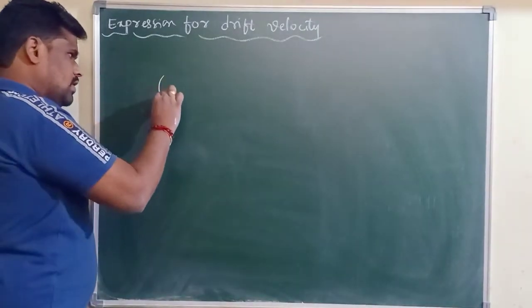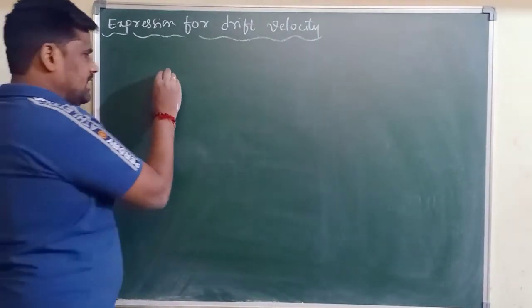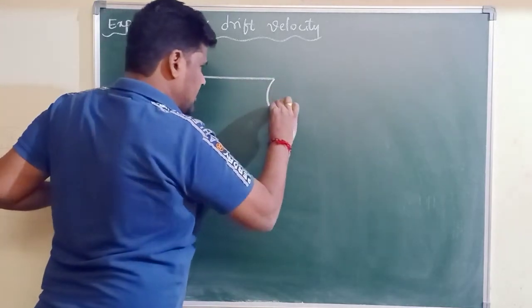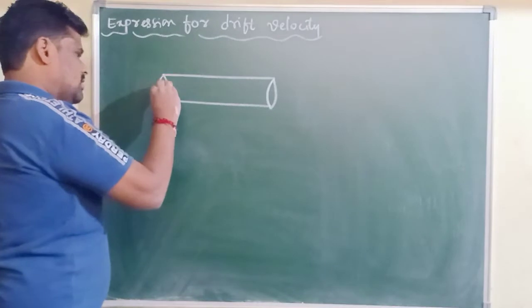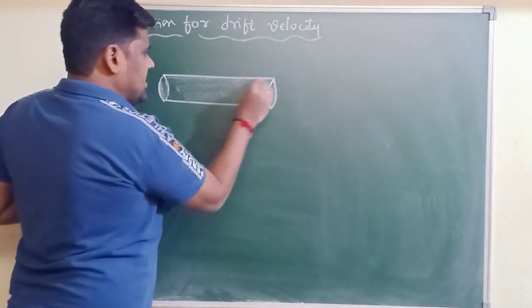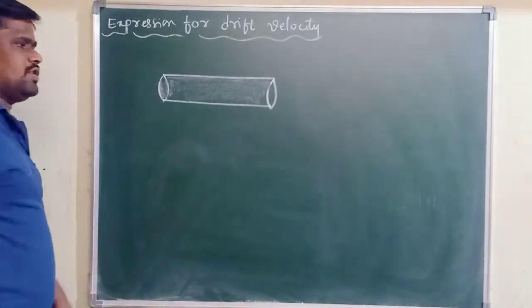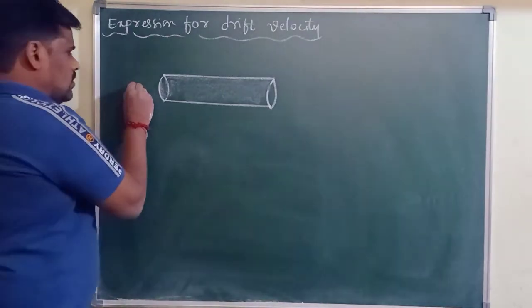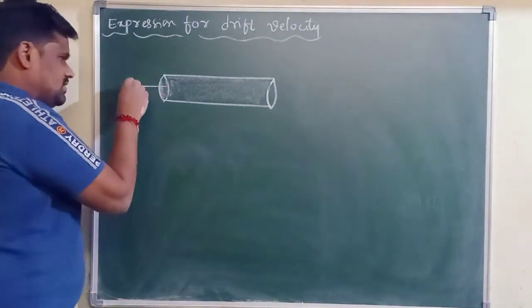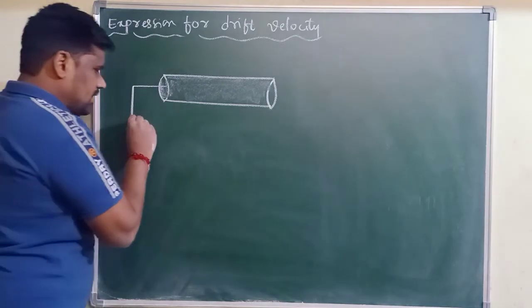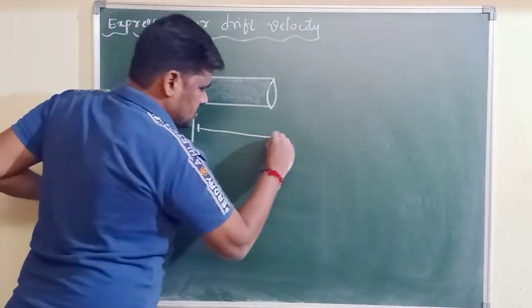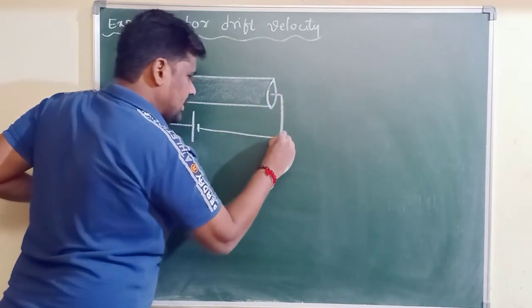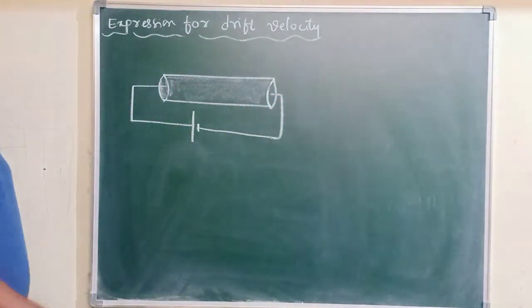So, let us take a conductor of length L and area of cross section A. It is a conductor of certain length L, and A is the area of cross section of a conductor. Across this conductor, let us apply the potential difference. V is the potential difference applied across the ends of a conductor.